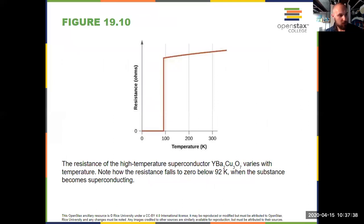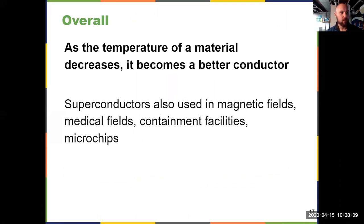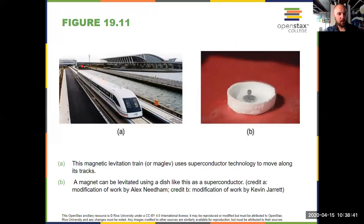There's a relationship between temperature and resistance: as temperature goes down, resistance also goes down. If you have computers in a room, that room tends to be kept cold — resistance goes down as temperature goes down. When you reach the threshold temperature, resistance drops to zero, and that's where we identify a superconductor. The overall trend to know is that as temperature decreases, a material becomes a better conductor, and below the threshold temperature it becomes a superconductor. Superconductors are used in many fields: magnetic field applications, medical fields like MRI, nuclear containment facilities, microchips and computing devices, and maglev trains.